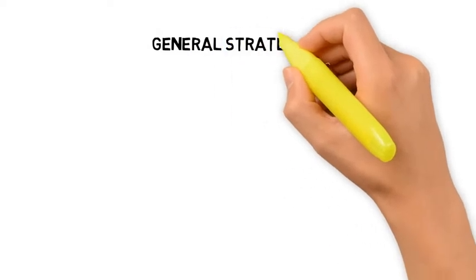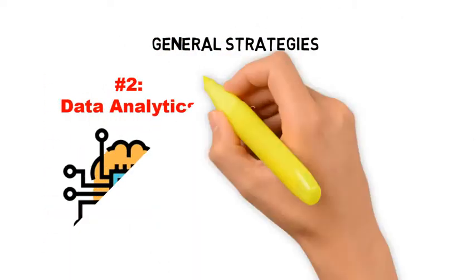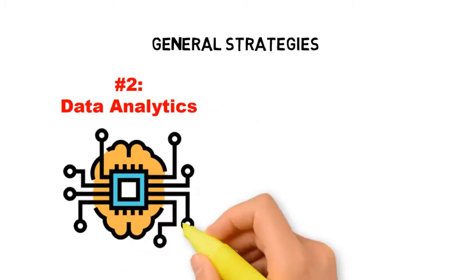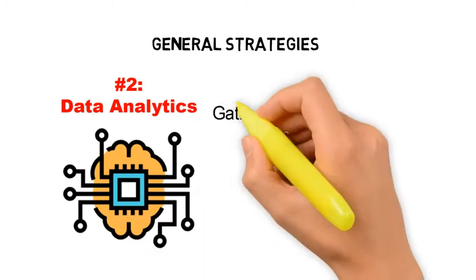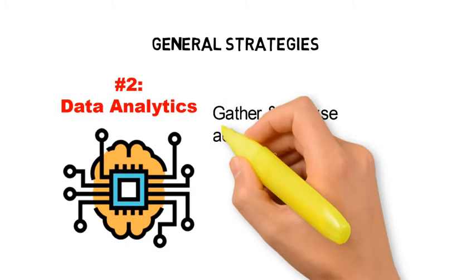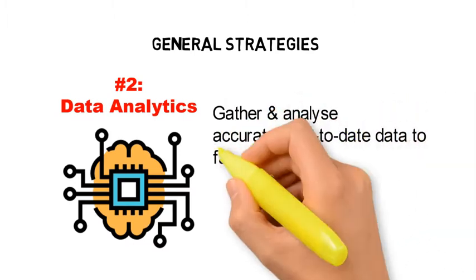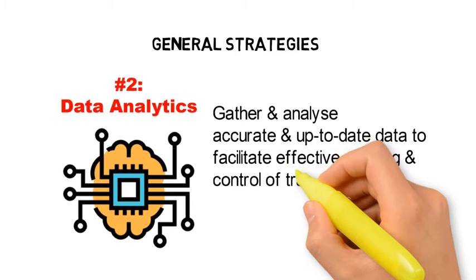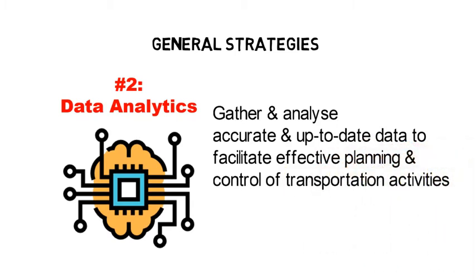The second general strategy is the application of data analytics: gathering and analysing accurate and current information to facilitate effective planning and control of transportation activities. Examples of such data collected would include transportation costs, shipment volume, carrier performance, etc.